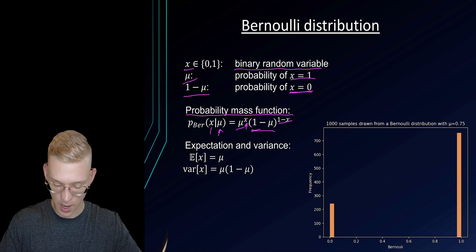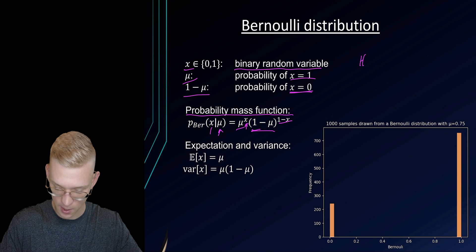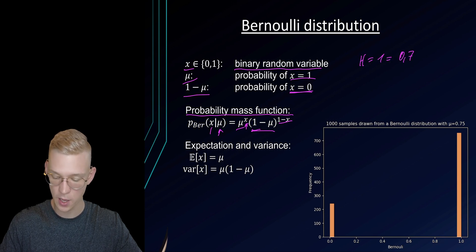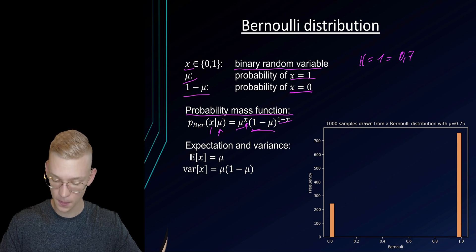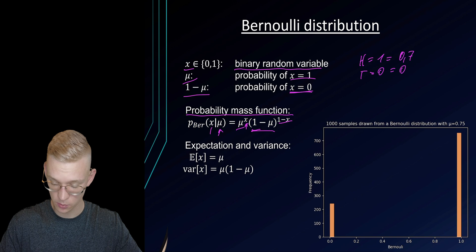So let's say we have for example a coin where heads equals 1 and that is 0.7. So we have not a fair coin and tails equals 0, that is 0.3.